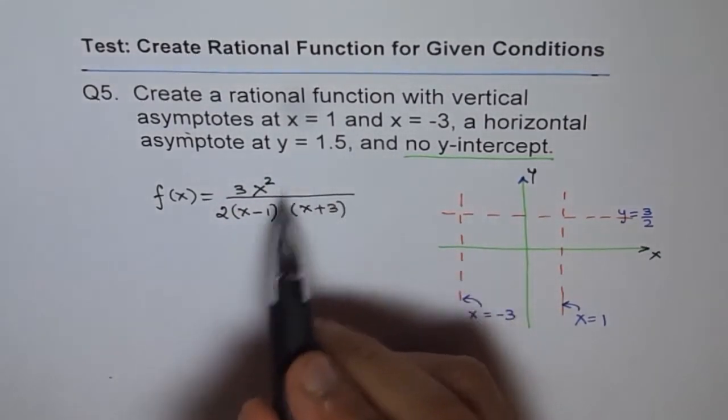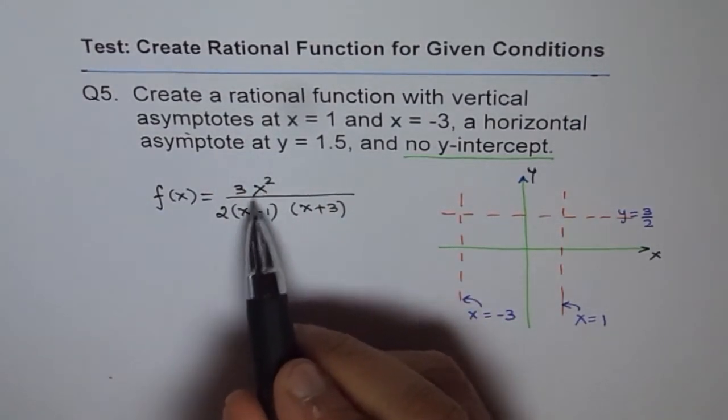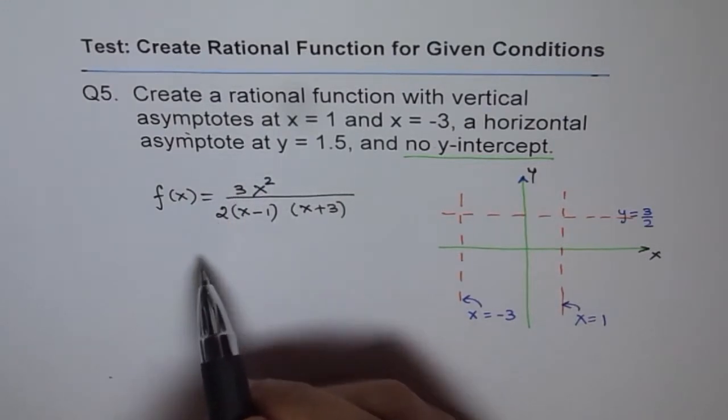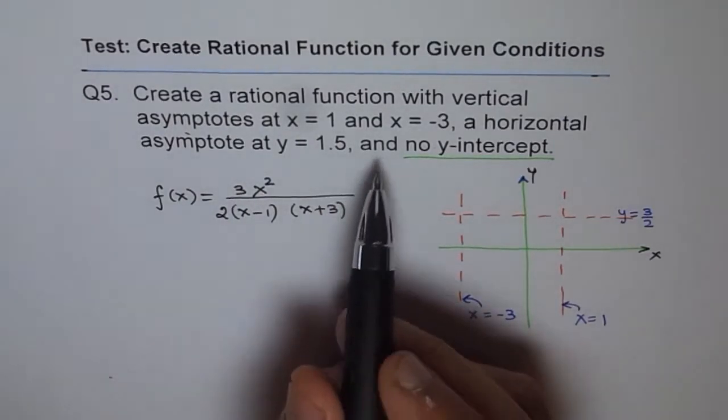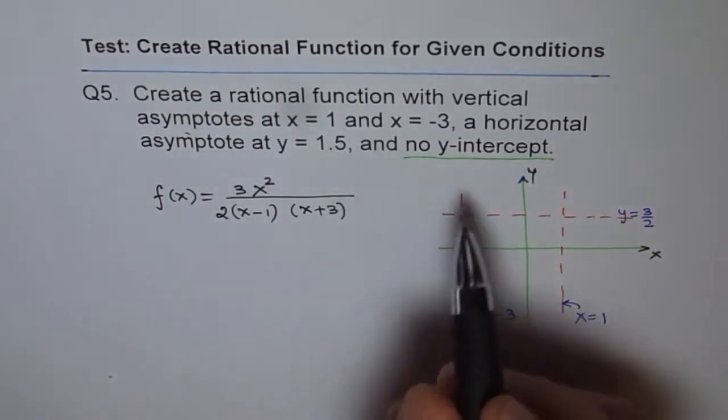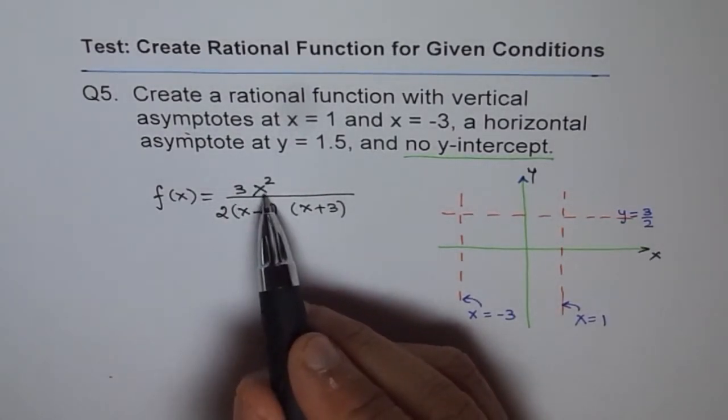Now that gives me this part of the equation. So now we know the degree of numerator and denominator is both 2. And therefore, horizontal asymptote will be ratio of their leading coefficients. Now the next half is, it has no y-intercept. Now no y-intercept, if I put 0 here, I get y-intercept at the origin itself.